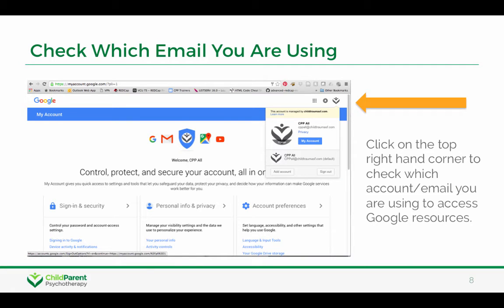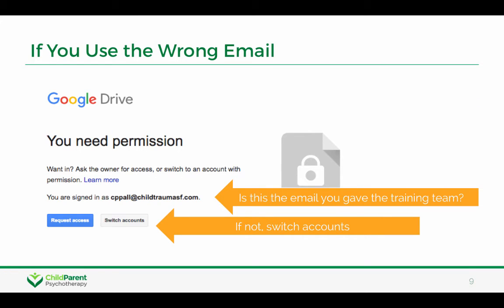To check which email you're using, go to the upper right-hand corner of your screen in your browser and click. Typically there'll be a circle, your photo, or some type of logo. When you click, you can see what account you're using, and it should be the account that you gave the training team. If you're using the wrong email, you might see an error message like this one, and then you would know that you could switch accounts just by clicking there.